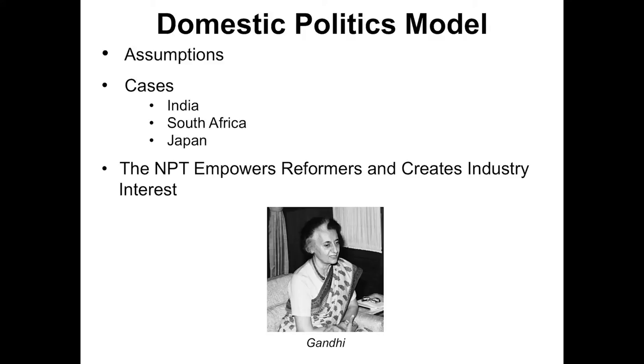Mrs. Gandhi in 1974 had the capability to acquire nuclear weapons. A security model would suggest that India would have been rushing to get nuclear weapons after the Chinese tests in 1964, but they didn't — they leisurely developed a program. In 1974, the scientists came to Mrs. Gandhi, who was in the middle of a domestic crisis — the emergency — and presented her with the option to test a weapon, a peaceful nuclear device.